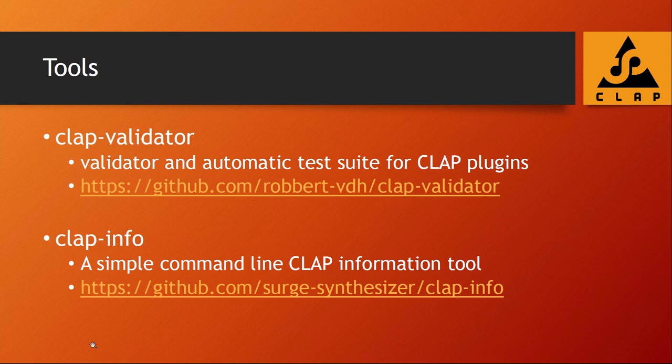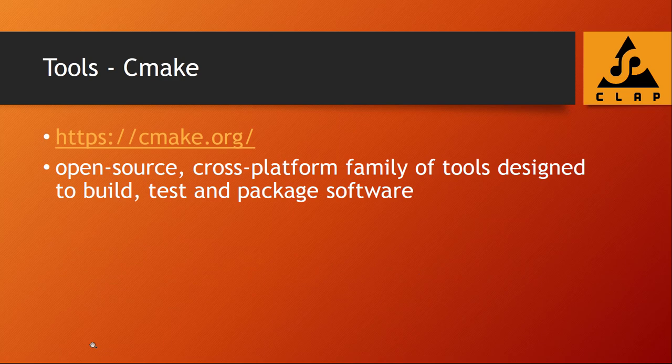Moving on to tools: there are two nice tools already available. There is a validator which stress-tests your plugin — you can check that out on GitHub. There is also a little tool that prints out the metadata information of your CLAP plugin, so you can verify that the most basic feature works. If that works fine, it will also be read in Bitwig and other hosts, so you can start debugging other issues from there. In the future I'll have a deeper look at these tools, but for now it's just good to know they exist.